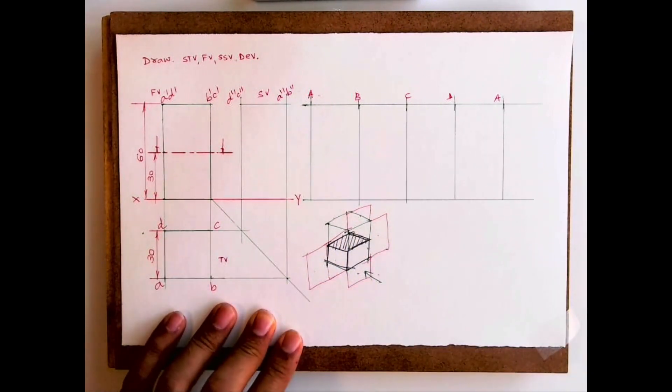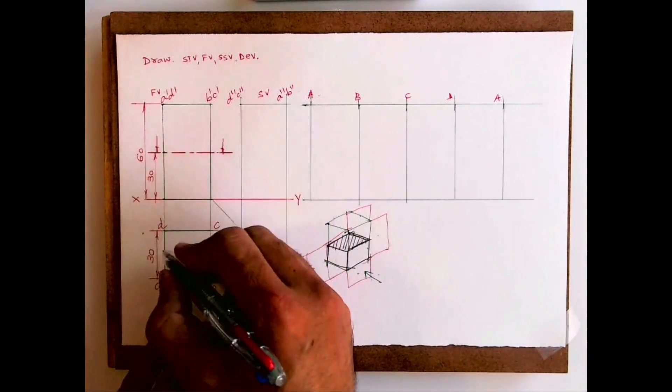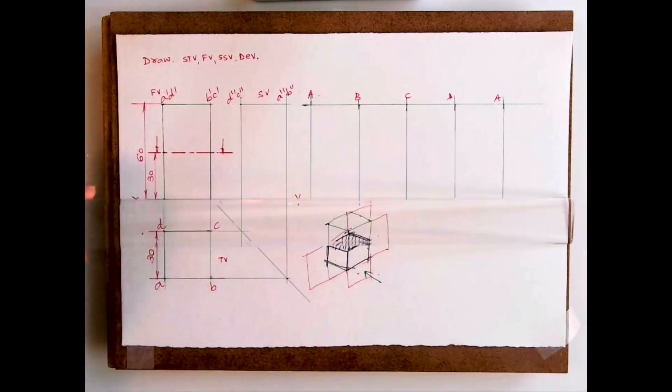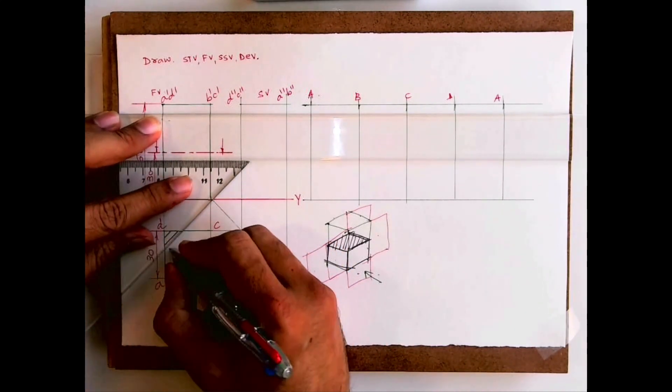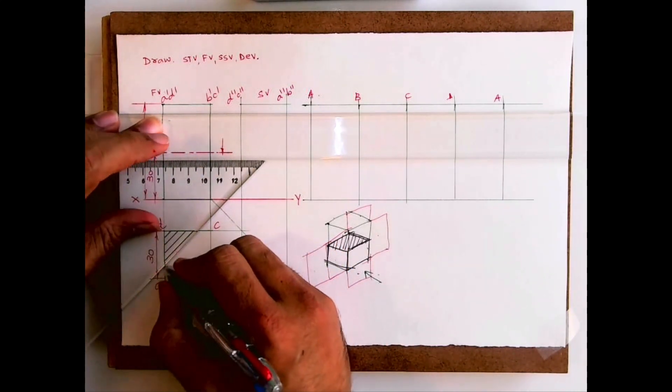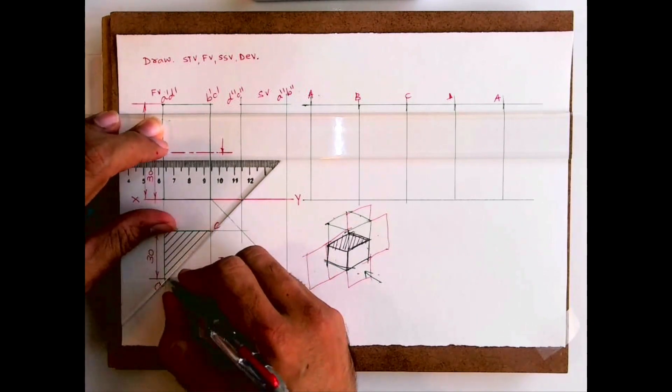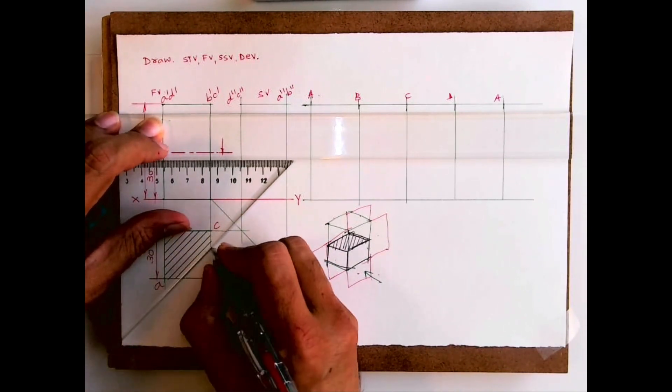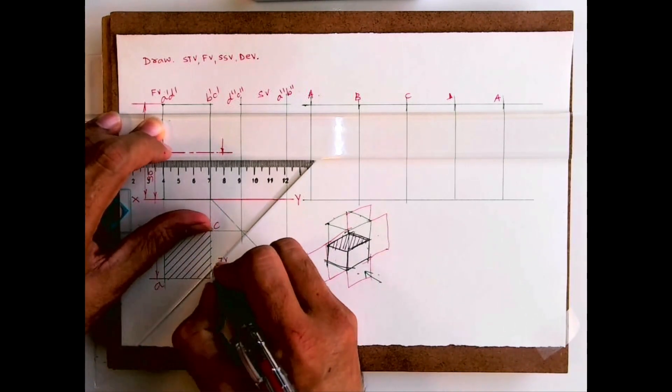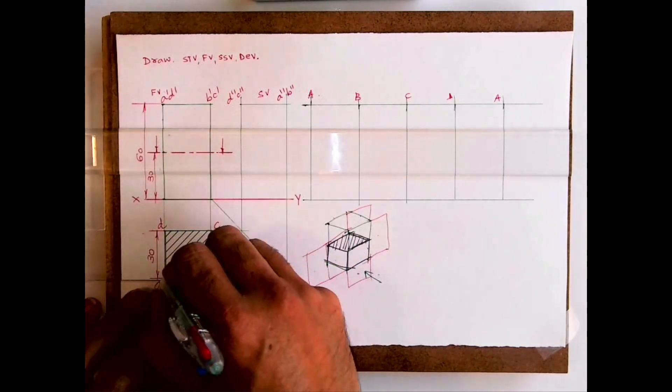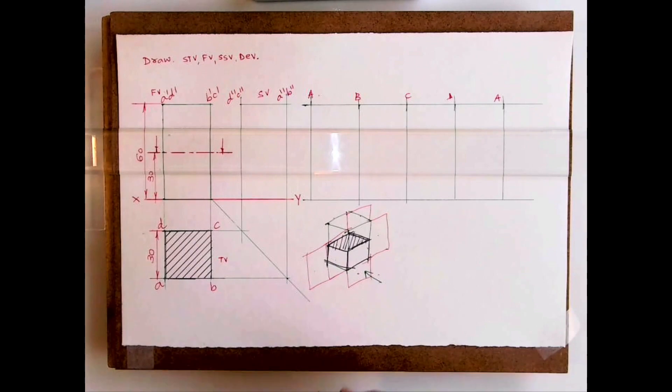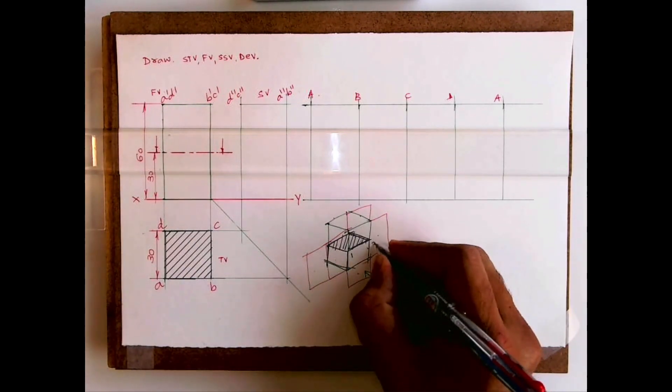See, this. So we'll hatch. Top view, we can use 45 degree, 30, 60 degree, any angle whatever you want. We can take that angle for hatching lines.